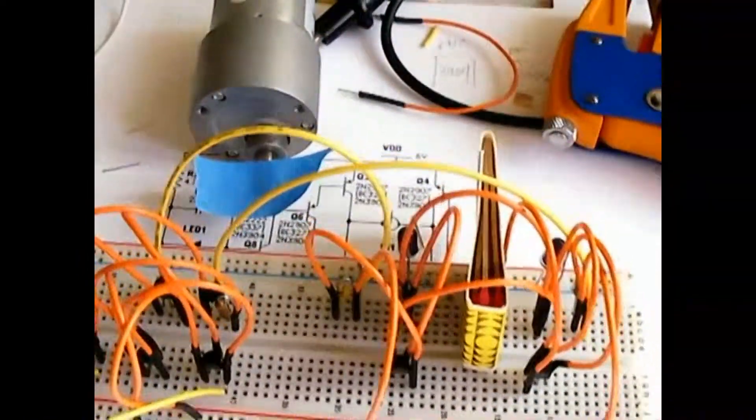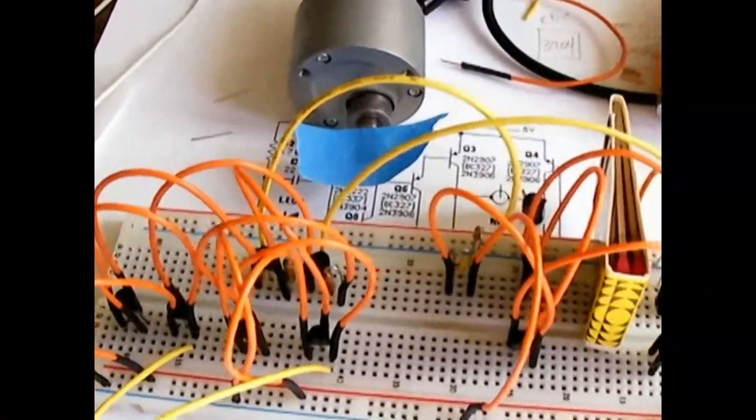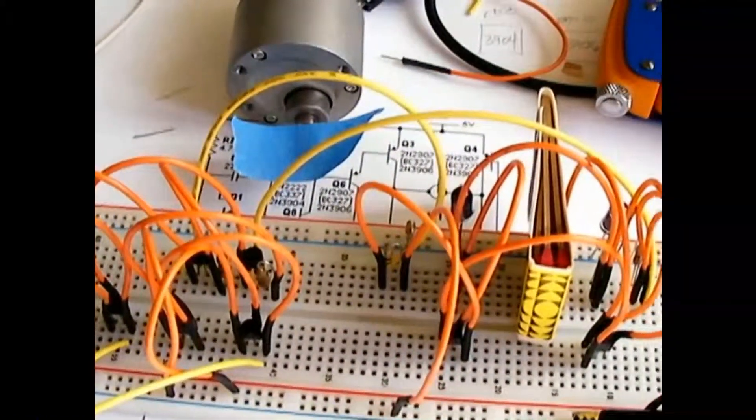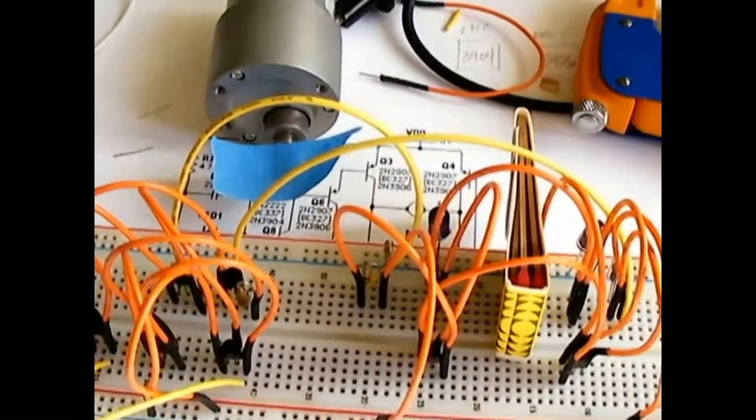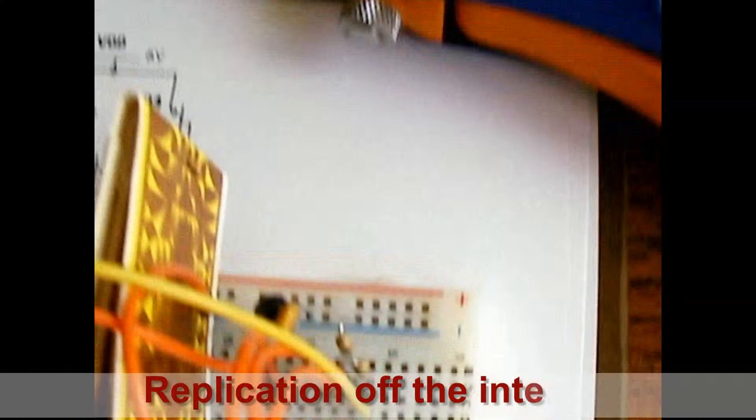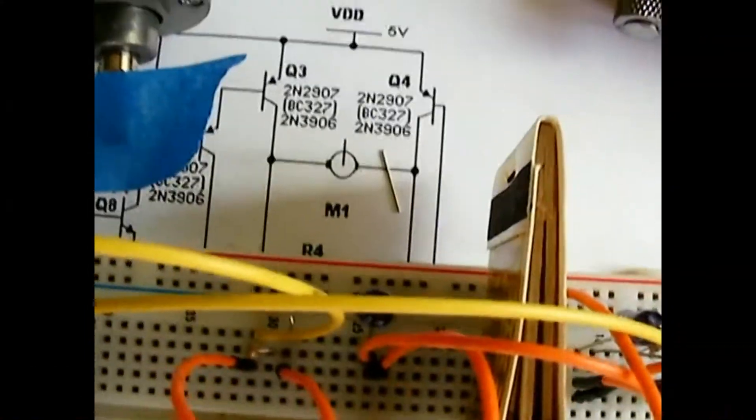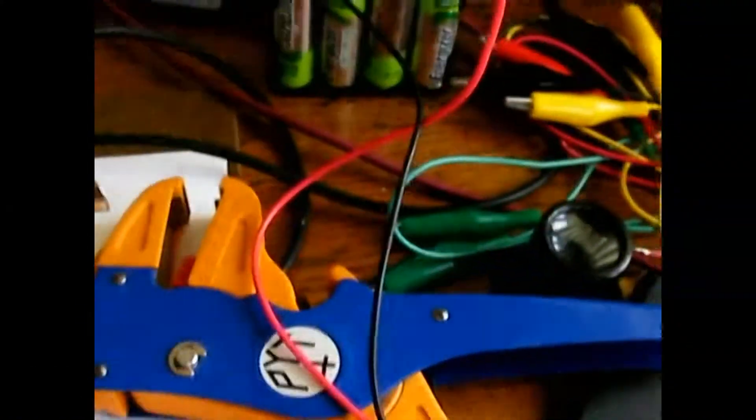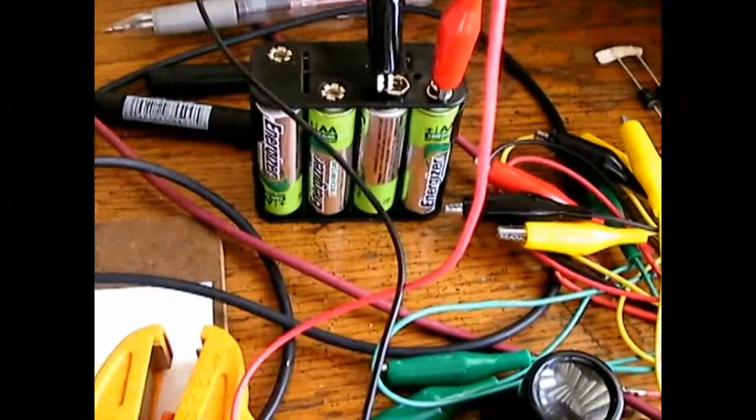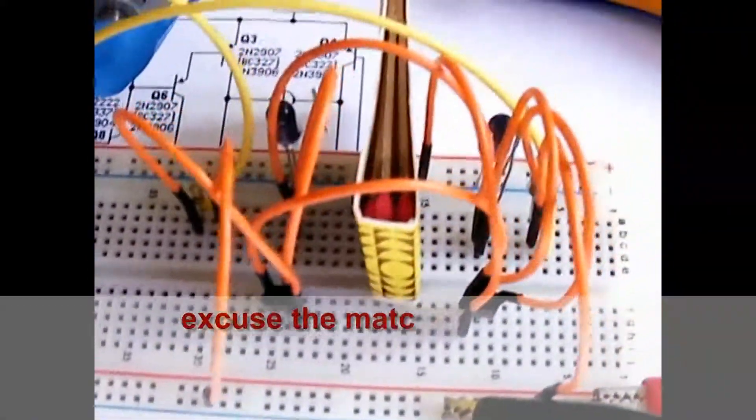Hi guys, I'm testing out a schematic for a solar sun tracker. As you see, we have two diodes over there, and there's the motor, and there's my 12-volt battery pack just to test it out.